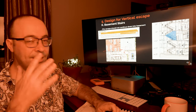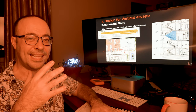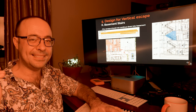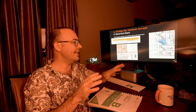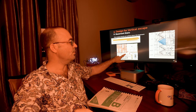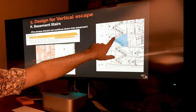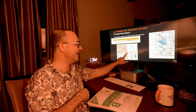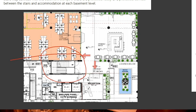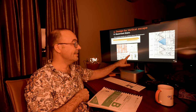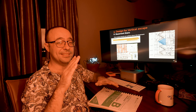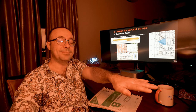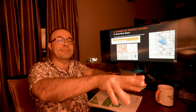Basement stairs: not a lot of people know this, but you're not supposed to have the upper stair from above connecting into the basement — it's got to be a completely separated stair. You can connect them but then you have to put a wall in between to separate them completely. The escape stair goes straight out from the basement, and the upper one goes straight out from ground floor. So don't connect the basement stair to the upper storey stairs.